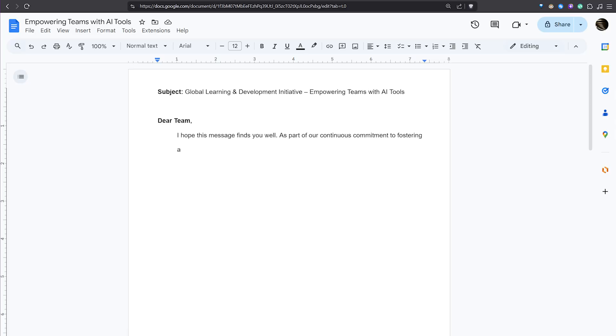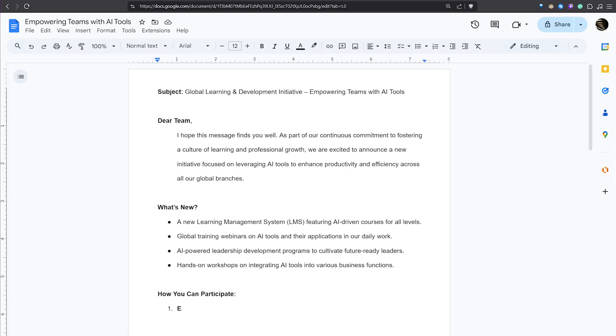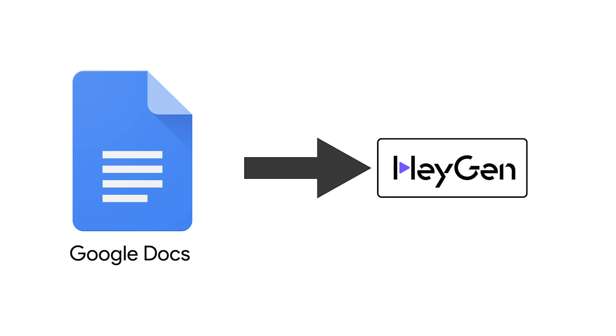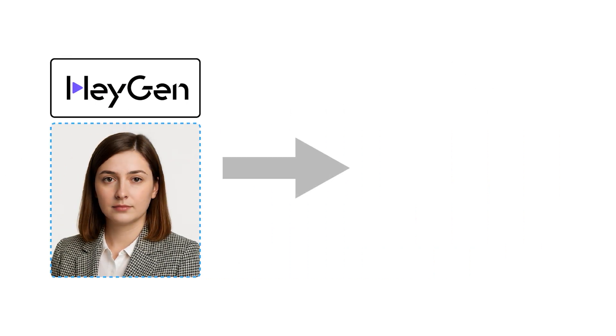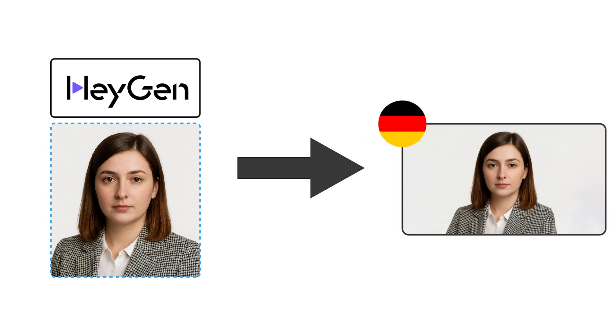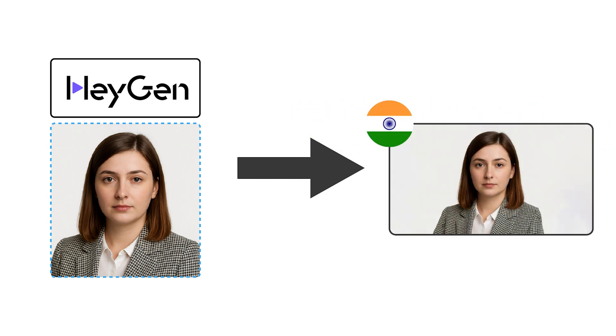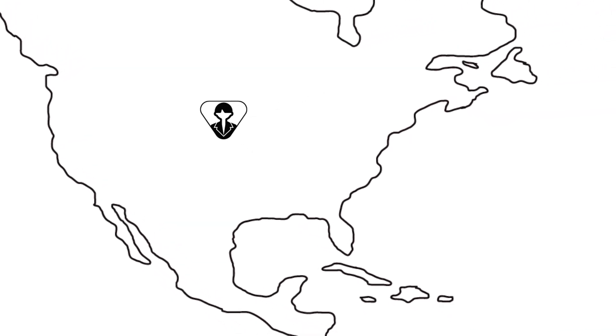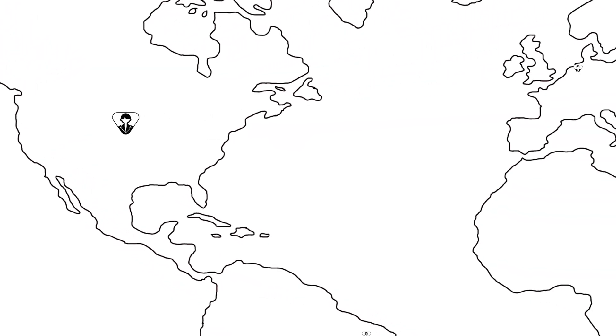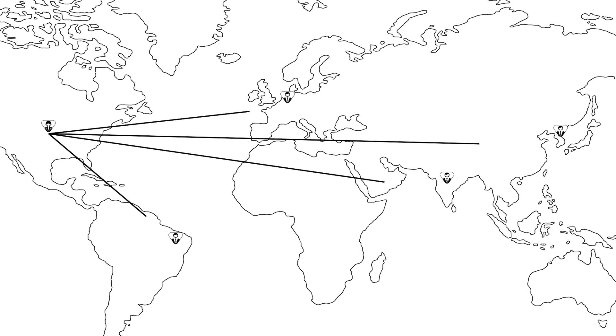She can do this in multiple languages. Once she creates the learning or training content in text, she can just upload the text to the Heijan tool. Either an AI avatar or Laura's real avatar can speak that content. She doesn't need to even be in front of the camera to create the videos. Even without additional budget or extra resources for production, she can reach all the employees in different locations with different languages, locally in every office that the company is represented.